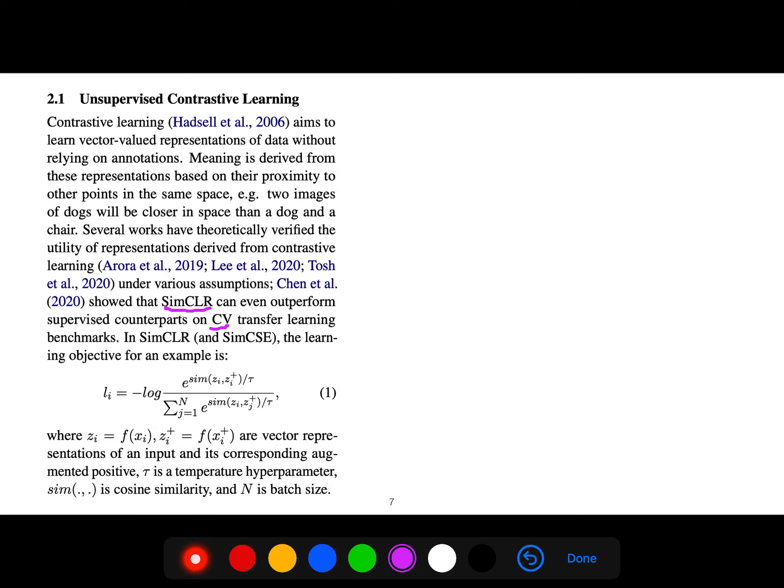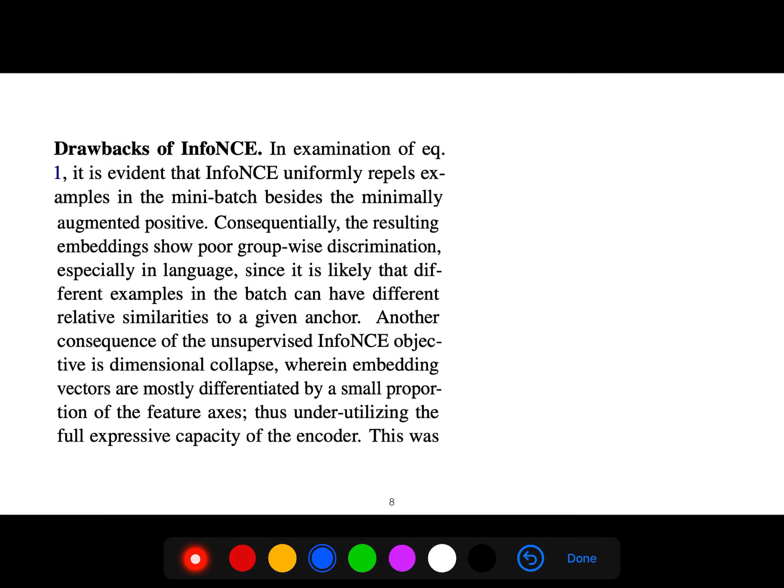In SimCLR and SimCSE, the learning objective is like this loss. ZI and ZI plus are just vector representations of your input and its corresponding augmentation. Tau is always the temperature, a hyperparameter you can choose.